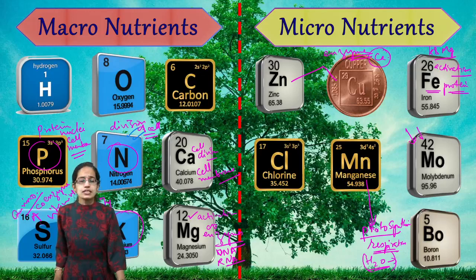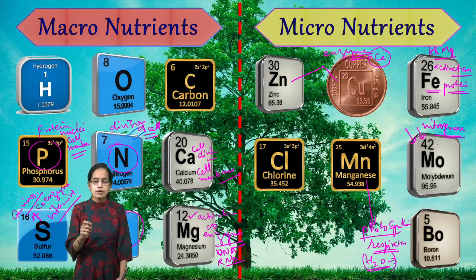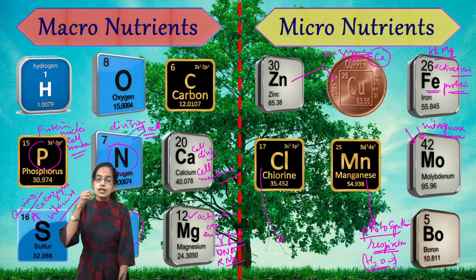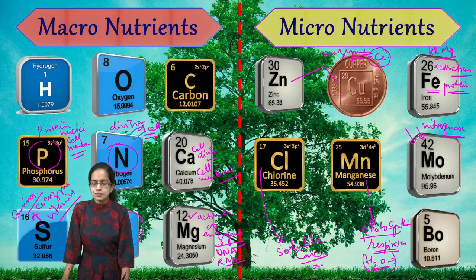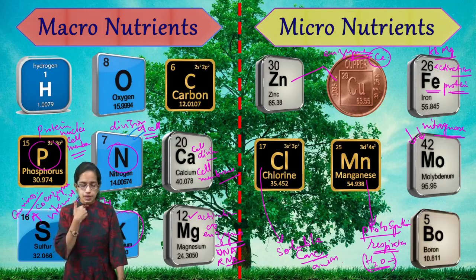Molybdenum is important because it is a major component of the enzyme nitrogenase, playing an essential role in nitrogen fixation. Finally, chlorine has an important role related to soluble concentration and the anion-cation balance, making it very important for maintaining ionic equilibrium in the plant.